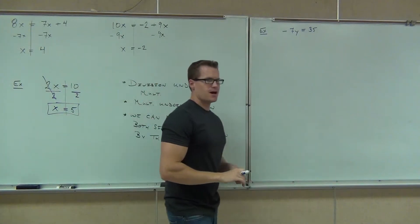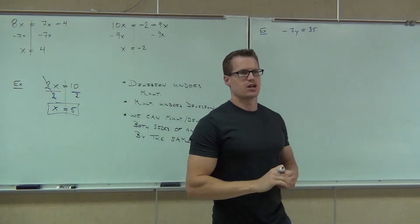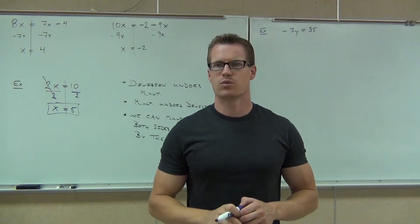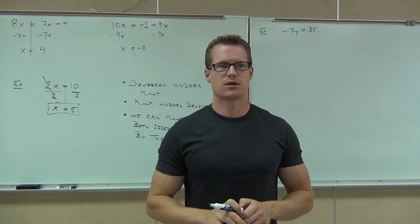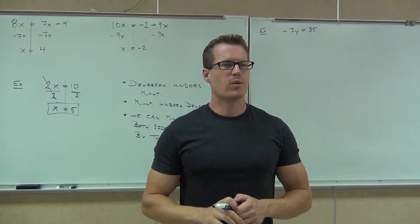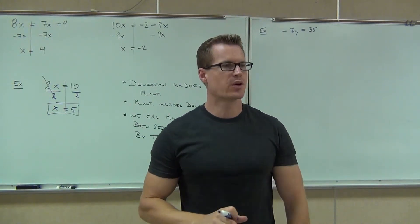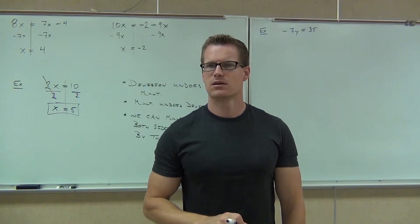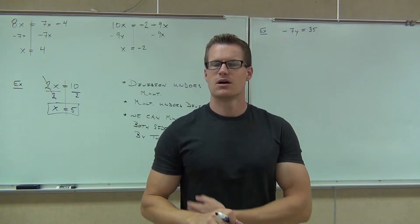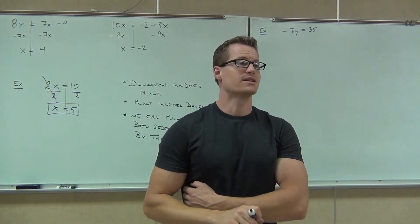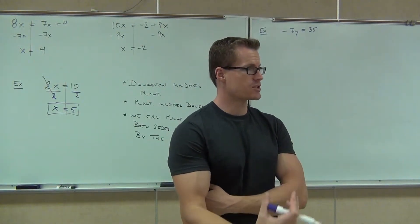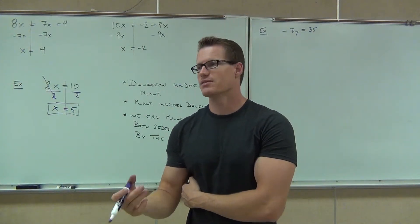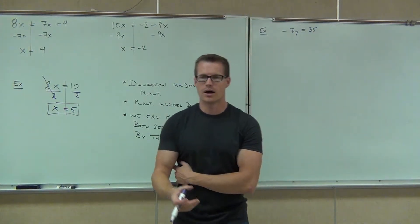Negative 7y equals 35. Ladies and gentlemen, am I supposed to add, subtract, multiply, or divide? What do you have to do? Why won't addition work here? Because a lot of people go, well, there's a minus right up front. That's right — it's a negative 7. So it's actually negative 7 times y, and we need to get rid of the negative 7 times y.